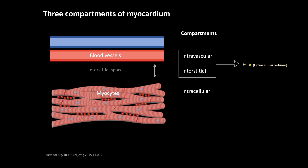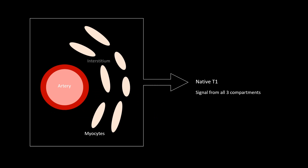There are three compartments of the myocardium: intravascular, interstitial space, and intracellular space. The intravascular and interstitial compartments together form the extracellular volume (ECV). The signal for native T1 value comes from the entire myocardium — it does not differentiate between the various compartments, which also makes it more sensitive.